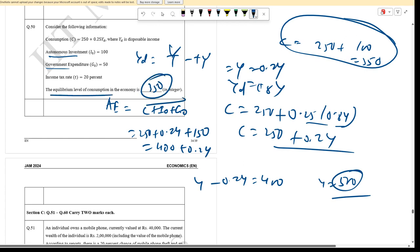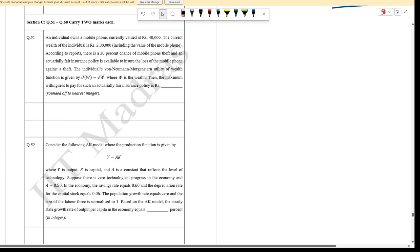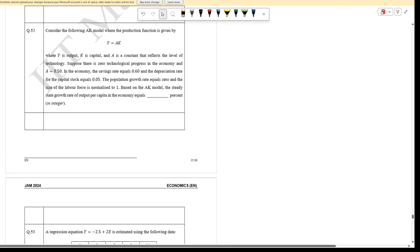Question 52: Y equals AK is given. Savings rate is 0.6, technology level A equals 0.5, depreciation rate delta equals 0.05, n equals 0, labor force L equals 1 normalized. Express output per capita as y equals Y/L, which equals AK/L with L equals 1. Formulate delta K equals sY minus delta K.